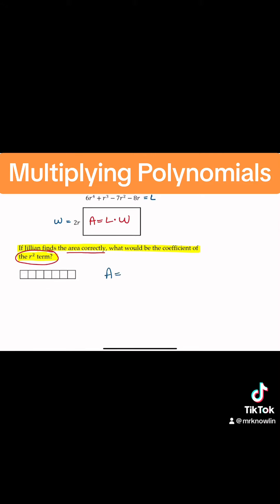Area is equal to - now I'm just going to use a little box method here. I'm going to make it 1 by 4 because this has 4 terms and this is just 1 term.